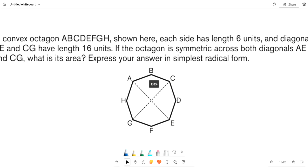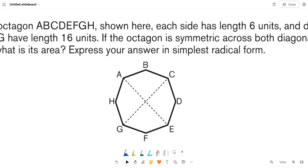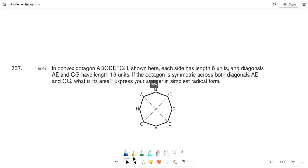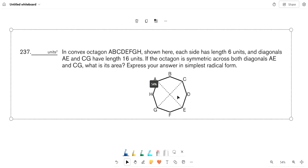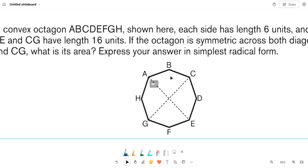We can see that HG is 6, and because it's symmetrical on both diagonals, we can find that all of these angles are equal and all of these angles are equal.